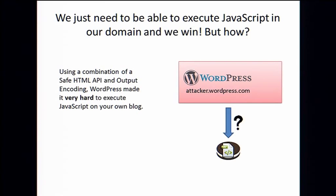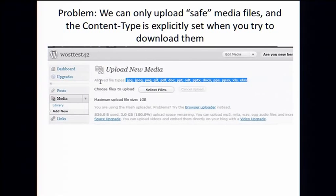The only thing we need is to be able to execute JavaScript in our own domain. If we do that we win and it seems like an easy problem. I was looking for cookie issues because I thought this would be easy — like Blogger lets you execute script in your own domain. But it turns out it's actually very, really pretty difficult to execute script in your own domain in WordPress: they use HTML safe API output encoding. So if you can execute script in your own domain, that's actually a bug. We were looking for bugs. Jesse and I actually spent a long time looking for this, and Jesse was the first one to find XSS in our own domain.